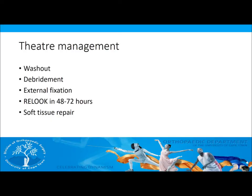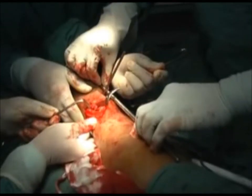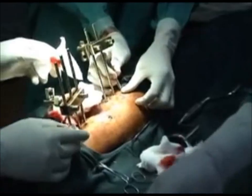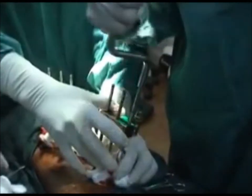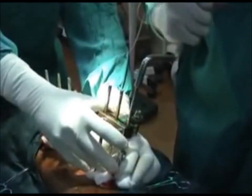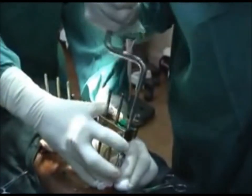Well done. You have safely managed and referred your patient. In theatre, we will wash out the wound with 3 litres of saline for each successive Gustilo type. The wound will be debrided with excision of all dead and devitalised tissue. The wound is not sutured at the first debridement and an external fixator is used to maintain the reduction, and the wound is dressed.